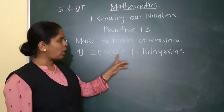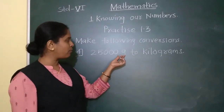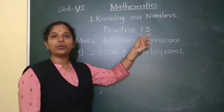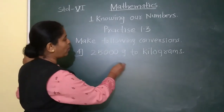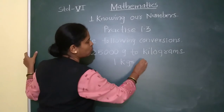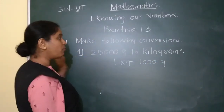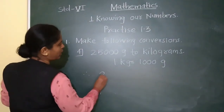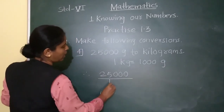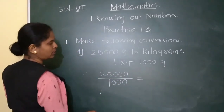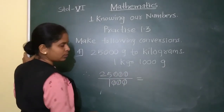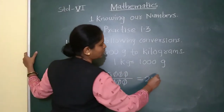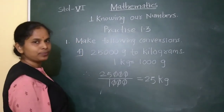Fourth: 25,000 grams — we have to convert into kilograms. This is smaller to bigger, so we divide. Since 1 kg equals 1000 grams, we divide 25,000 by 1000. We can cancel the three zeros from both numbers, and what remains is 25. So the answer is 25 kg.